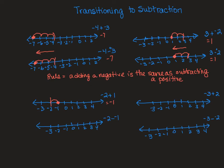Now this is the one that is somewhat confusing. What if I'm subtracting a negative? I'm going to start at negative 2, and I think I'm subtracting and going to the left — but wait, I'm subtracting a negative. That means I'm undoing or taking away that negative, and that becomes a positive. So I'm now going in a positive direction, and that answer is also negative 1. Those two negative signs together make a positive.